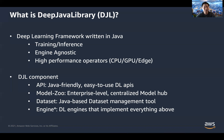Behind all these major components, Deep Java Library consists of engines, which are the core part. For example, the TensorFlow engine leverages the TensorFlow C++ API directly, and implements all the API, model zoo, and dataset components. Similarly, there are also PyTorch and MXNet engines, along with all the other different engines that Deep Java Library currently supports.